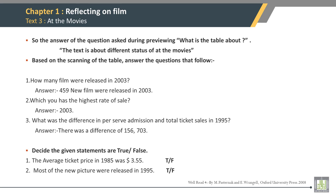Decide if the given statements are true or false. The average ticket price in 1985 was $3.55. This statement is true.